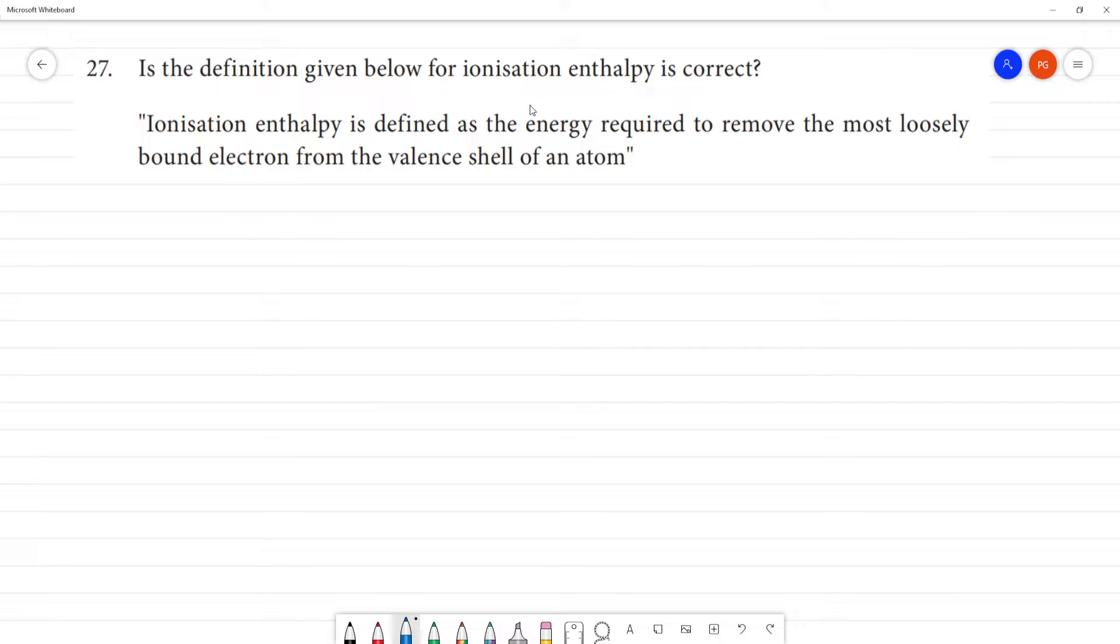Is the definition given below for ionization enthalpy correct? Ionization enthalpy is defined as the energy required to remove the most loosely bound electron from the valence shell of an atom.